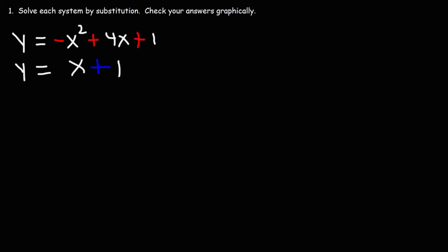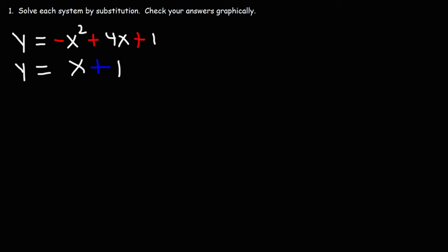What we have here is a system of equations. The first equation is a quadratic equation and the second one is a linear equation. We're going to solve this by substitution. Notice that in both cases we have an equation that equals y, and because they both equal y, we can set them equal to each other.